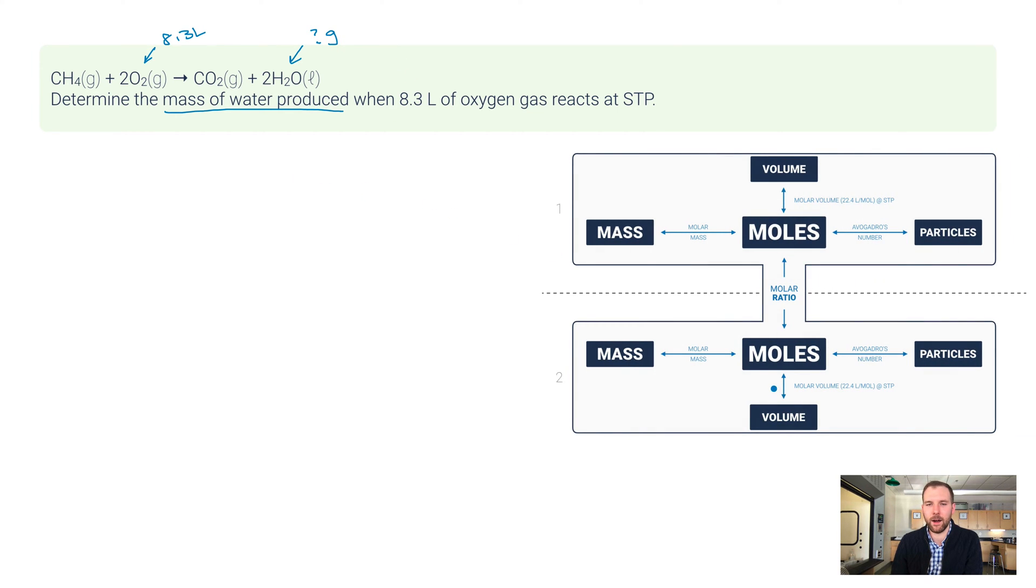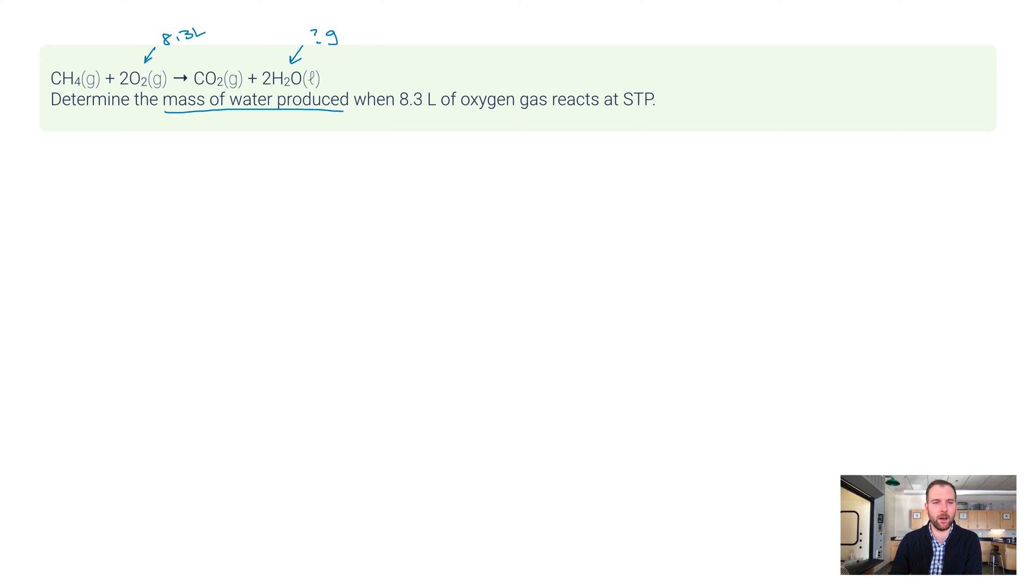Here's our map again. They're giving us a volume of oxygen, and we want water. They're giving us a volume, I want to convert to moles. Then between moles and moles I want to go to moles of water using the molar ratio from the equation. Once I'm into moles of water, I actually want to go this way: I want to convert using the molar mass of water to mass. Let's start with 8.3 liters of O2.